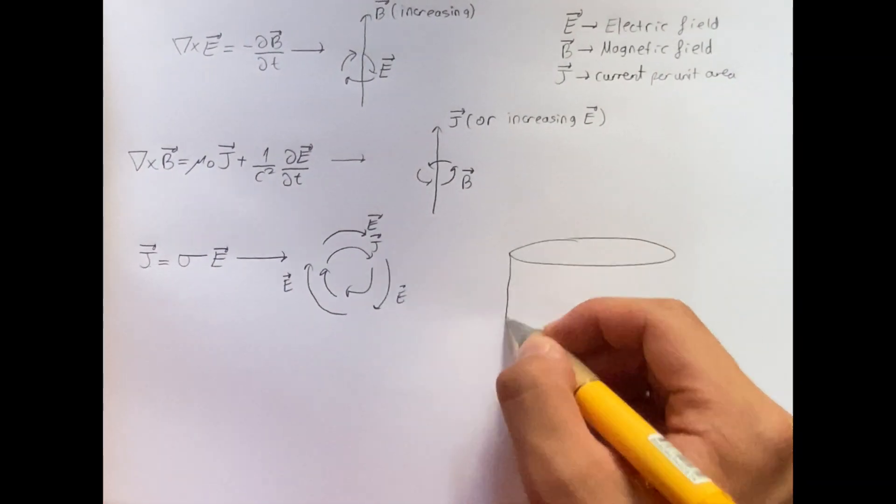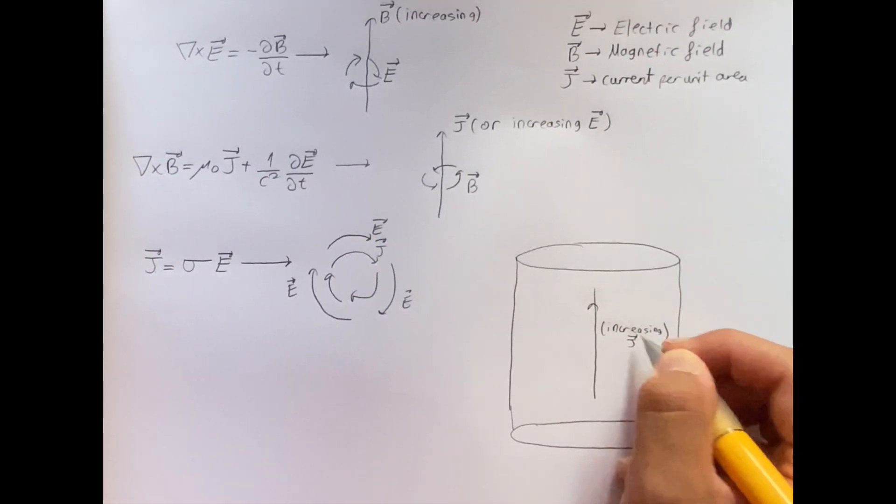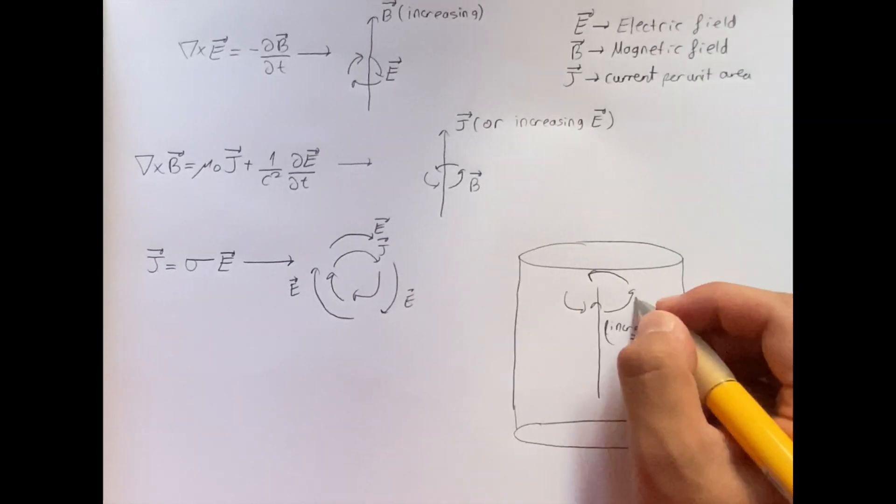Let's apply these diagrams to a conducting wire. Now, imagine an AC current in a conducting cylindrical wire. The current creates a magnetic field which changes in time.